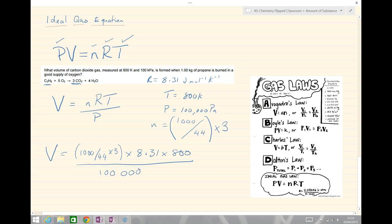All divided by 100,000. This bit here should be bracketed as well. That's going to give us a final answer of about 4.51 meters cubed. And if we were asking for it in centimeters cubed, that would be the same as 4.51 times 10 to the 6 centimeters cubed.